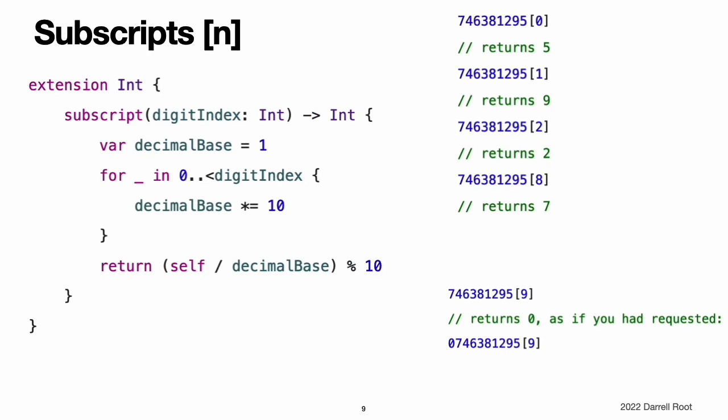Subscripts. Extensions can add new subscripts to an existing type. This example adds an integer subscript to Swift's built-in int type. This subscript n inside square brackets returns the decimal digit n places in from the right of the number.